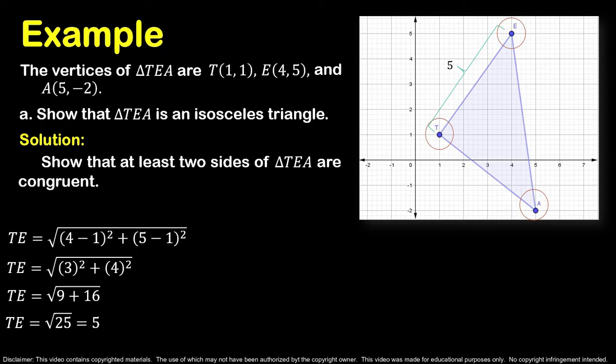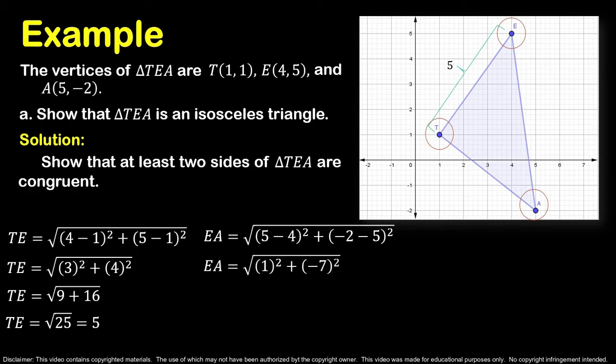To solve for the length of side EA, we have EA equal to the square root of (5 minus 4)² plus (2 minus 5)². Subtracting: 5 minus 4 is 1, and 2 minus 5 is −7. We now have the square root of 1² plus (−7)². 1 squared is 1, and −7 squared is 49. 1 plus 49 is 50. The square root of 50 is 5√2, so the length of side EA is 5√2 units.